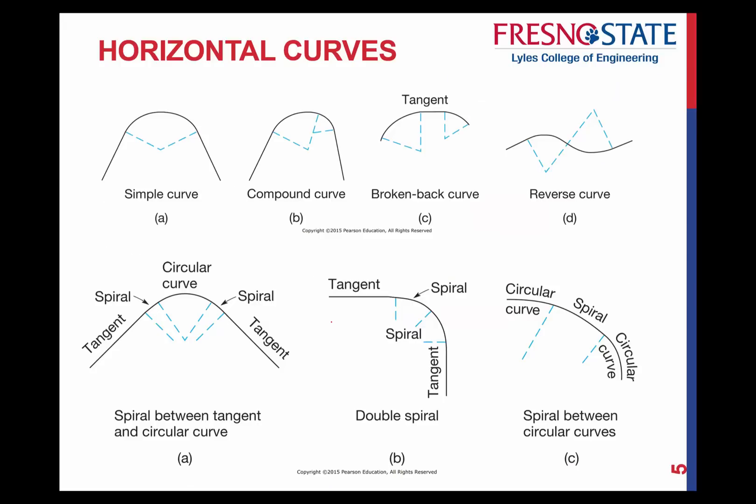Now, as we talk about, I want to just briefly talk about each of the different types of curves that we have. Simple curve is what we're going to deal with the most. That's where you have two straight tangent sections, and you're connected by one curve. That's a simple curve, and that's what we're going to be dealing with mostly. And that's where you'll find how designs are generally created.